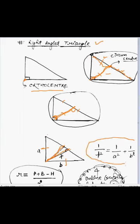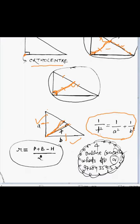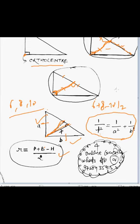There is also an important relation: if the perpendicular from the right angle vertex to the hypotenuse has length p, and the two legs are a and b, then 1/p² = 1/a² + 1/b². Additionally, the in-radius of any right angle triangle is given by: r = (perpendicular + base − hypotenuse) / 2. For example, for a 6-8-10 right triangle, in-radius = (6 + 8 − 10) / 2 = 2.